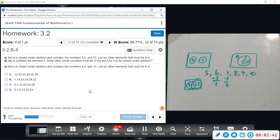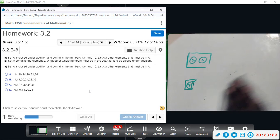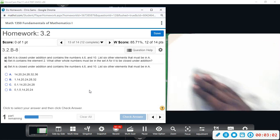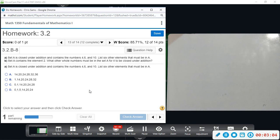Okay so let's go ahead and do 13 here. Set A is closed under addition and contains the numbers 4, 6, and 10. List six other elements that must be in A. So if it's closed, that means that everything that we add that's in the set must also be in the set as well.